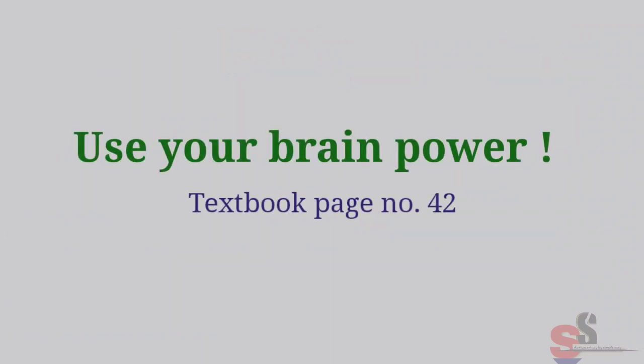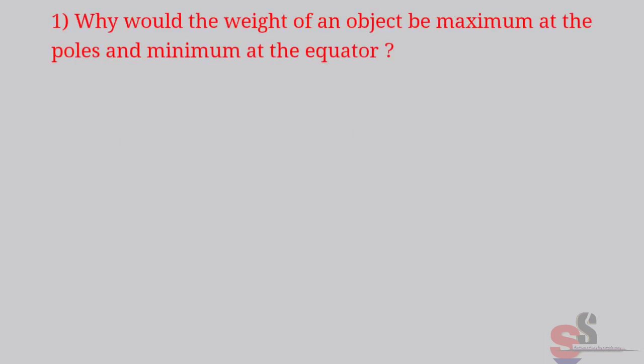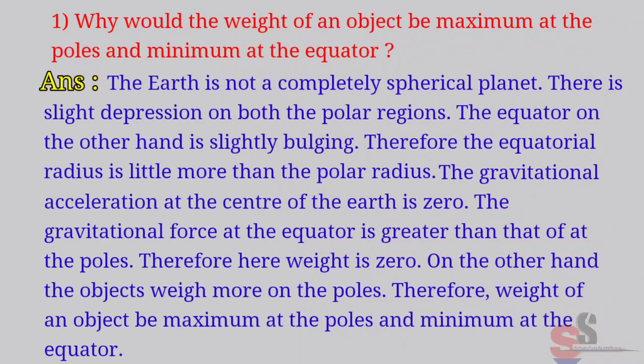Use your brain power. Textbook page number 42. Why would the weight of an object be maximum at the poles and minimum at the equator? Answer: The Earth is not a completely spherical planet. There is a slight depression on both the polar regions. The equatorial radius is little more than the polar radius. The gravitational acceleration at the center of the Earth is 0. The gravitational force at the equator is greater than that of at the poles. Therefore, here weight is 0. On the other hand, the objects weigh more on the poles. Therefore, weight of an object be maximum at the poles and minimum at the equator.